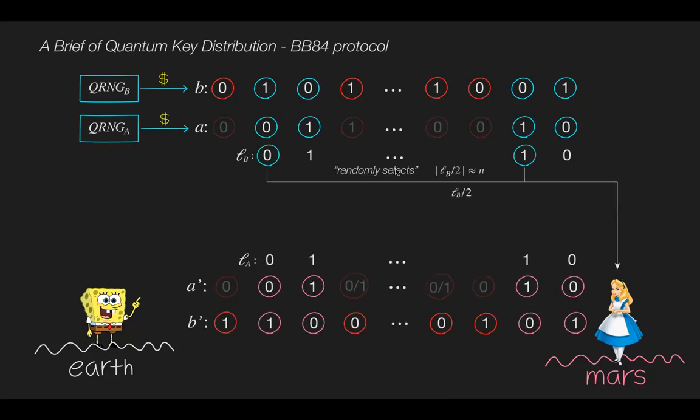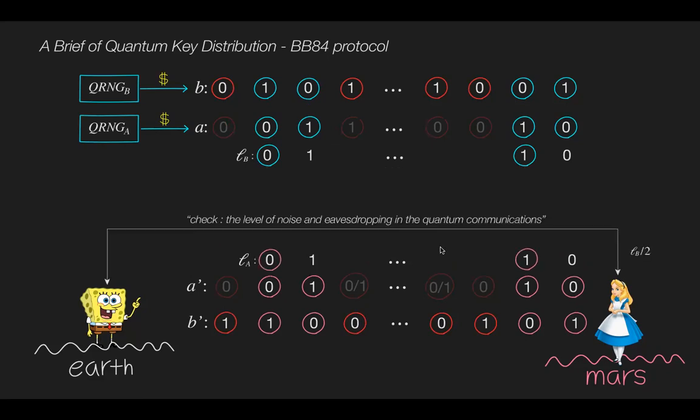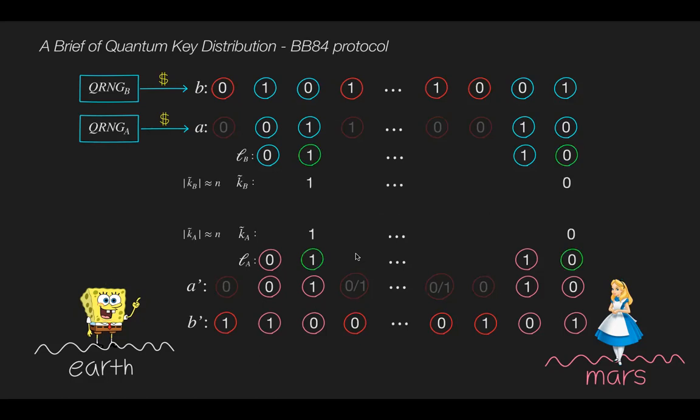Now Bob randomly selects half of his string and sends it to Alice. Then they check the level of noise or eavesdropping in their quantum communication. If the level of noise or eavesdropping is not acceptable, they abort the protocol and restart it. Otherwise, if the test passes, Bob and Alice each have the n number of the remaining strings k-tilde-b and k-tilde-a.